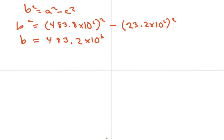All right, so that's your b. Now that you have that, all you have to do is write the equation. You have x squared over your a squared, so a is 483.8 times 10 to the 6 squared, plus y squared, and your b is 483.2 million.